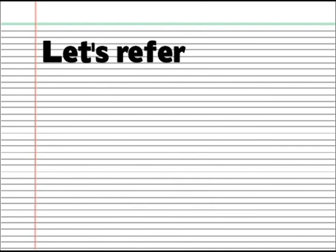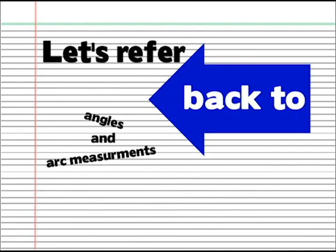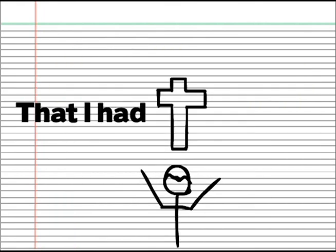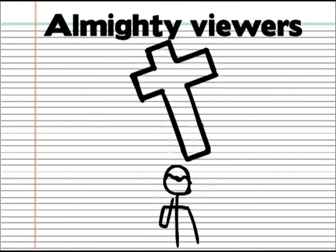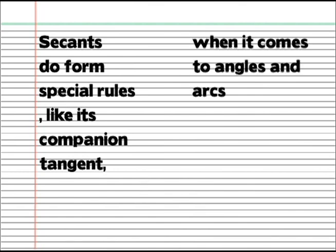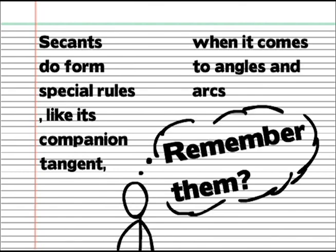Let's refer back to angles and arc measurements related to tangents and secants. Going back to secants, I will confess that I had sinned before you, almighty viewers. I lied. See, secants do form special rules, like its companion tangent, when it comes to angles and arcs. Remember them? Anyway, secants form several relationships, as well as tangents, with angle measurement and arc measurement.